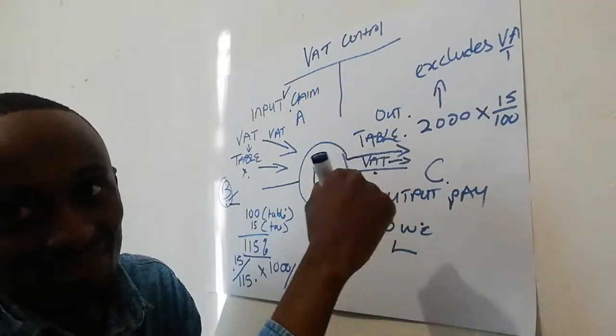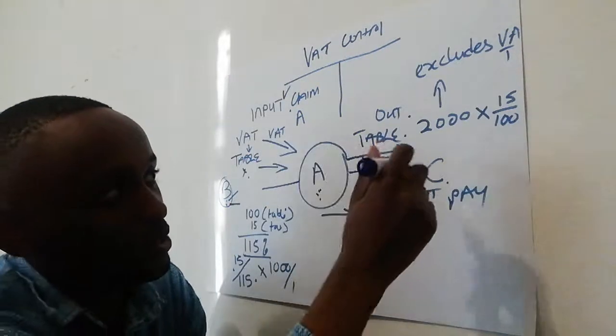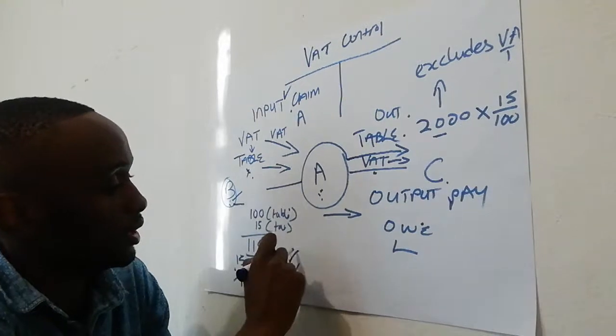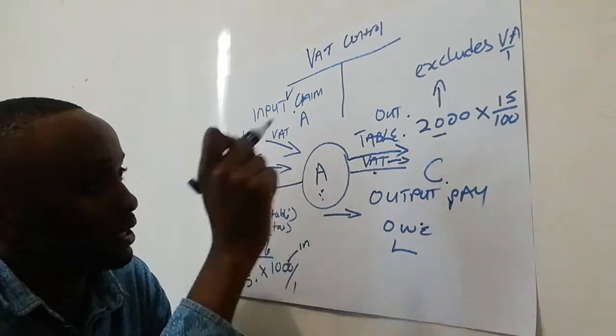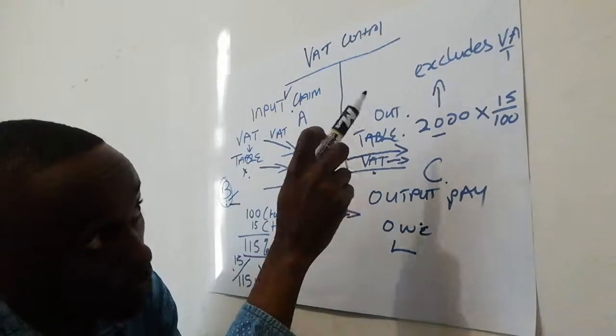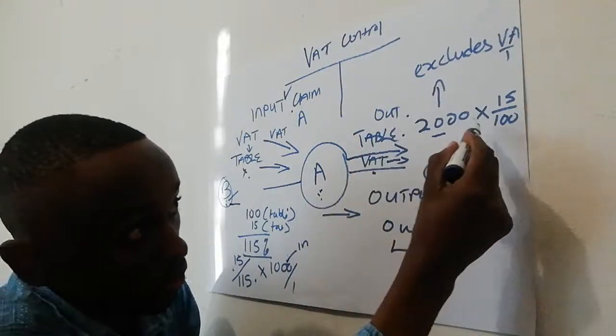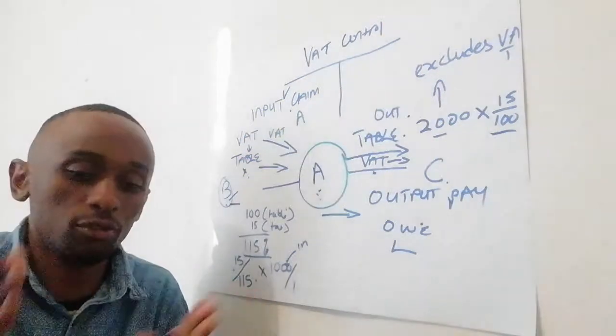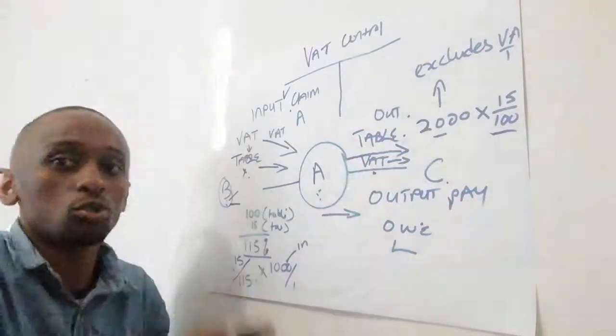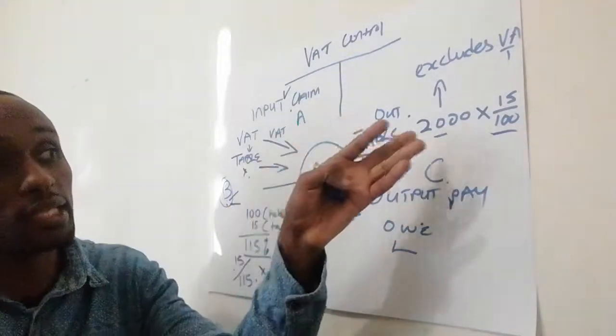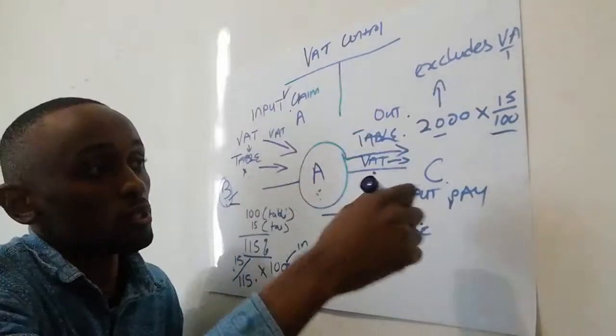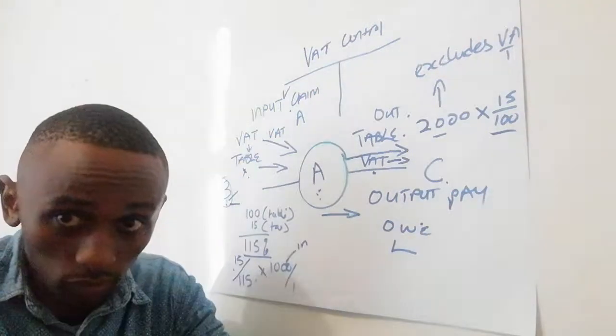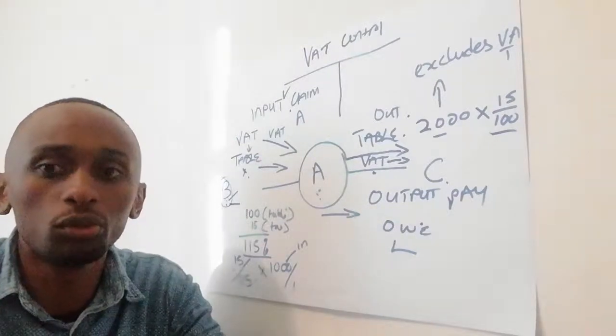It excludes VAT - this amount here includes VAT. So when you're dealing with an amount that excludes VAT, you have to use 100 because there's no VAT inside. So you say, okay, 15% and I'm going to add it on top. So basically it will be two thousand plus the 15 percent. I hope this makes sense and you get a better understanding of that.